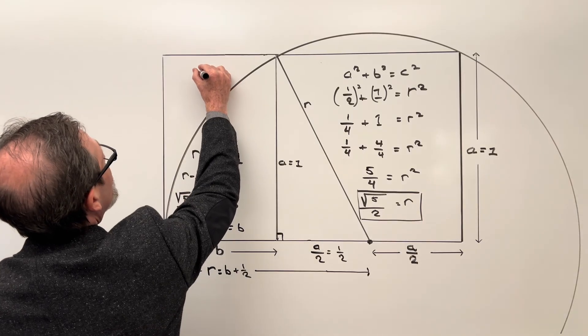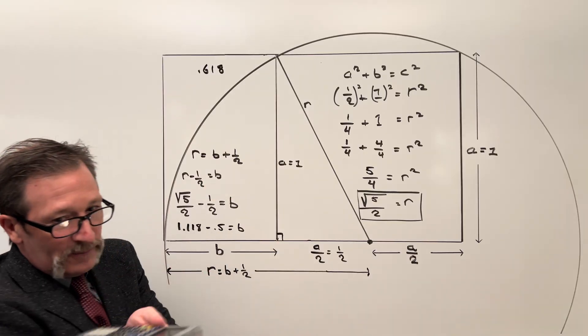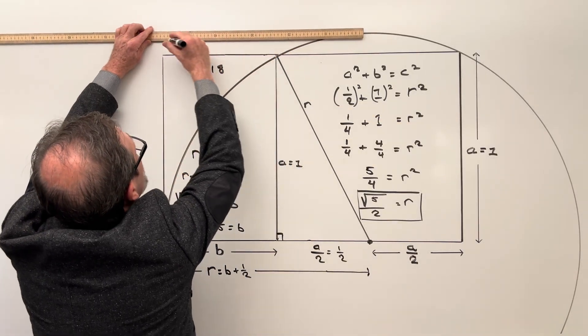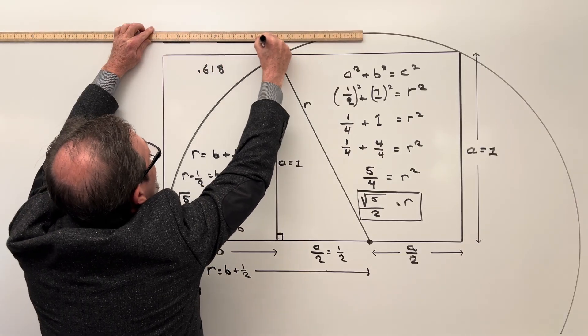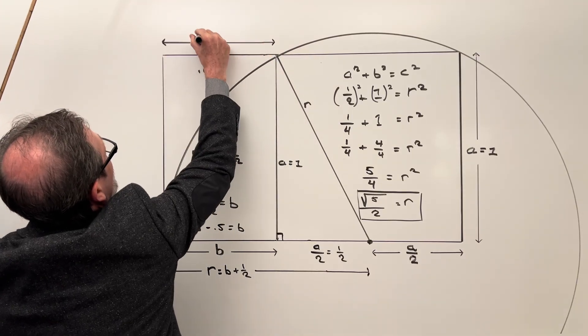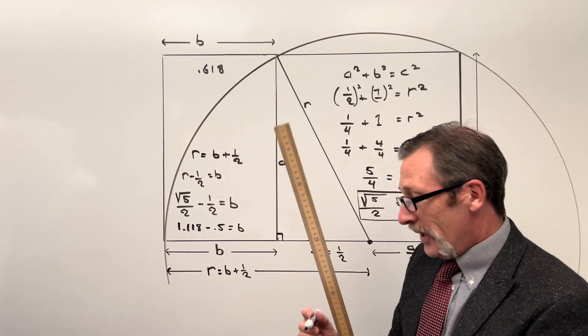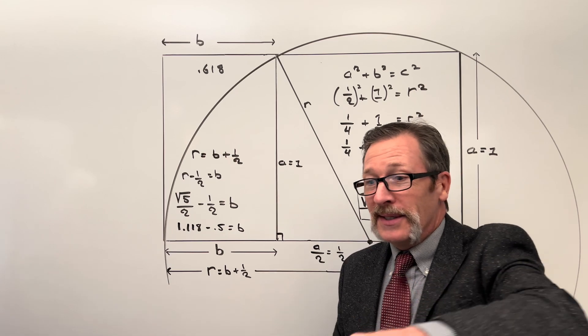So in other words, this is going to be 0.618 from here to here. I don't have room down there. So I'll just redraw it. So I'll end up saying my side B right here from there to there is 0.618. That's how you get side B. But there's much more. We're going to go into a little bit more depth in a moment.